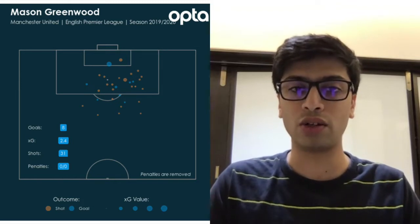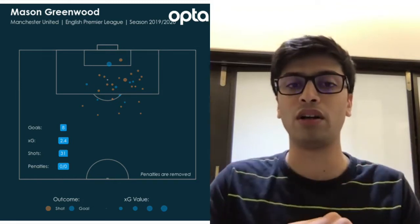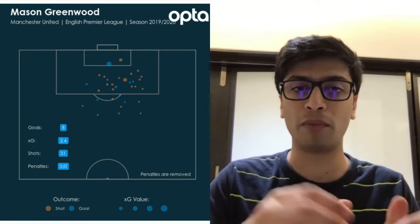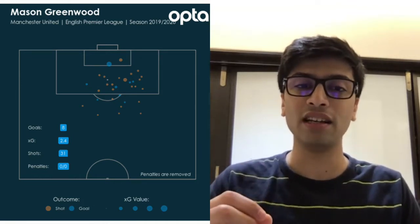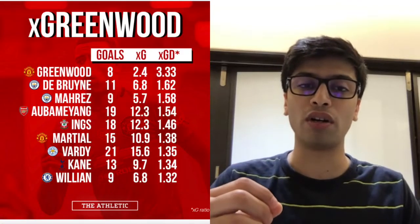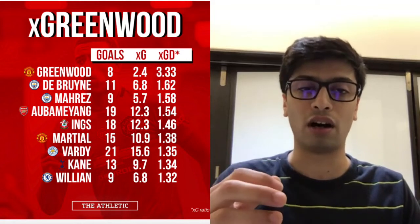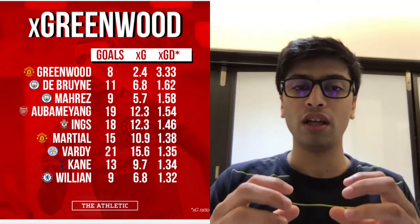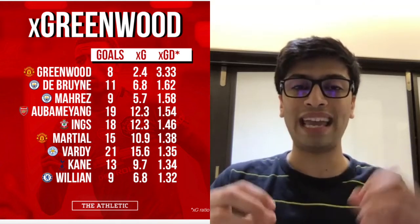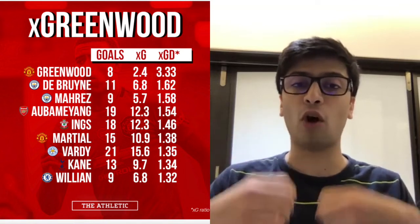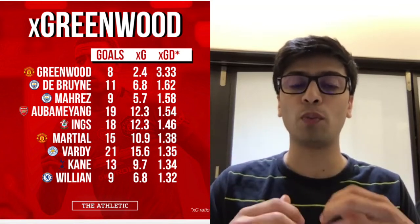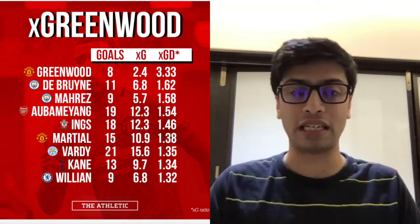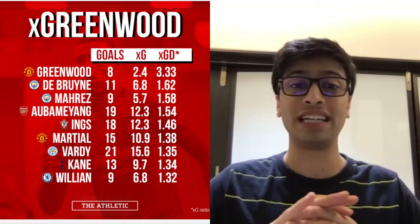When we look at this map and consider the likelihood from each position, Opta calculated that for the eight goals Greenwood scored up to after the Bournemouth game, he only has an expected goal count of 2.4. So he scored 8 goals whereas Opta would have expected him to score only 2.4 goals based on various data factors. This is absolutely incredible.